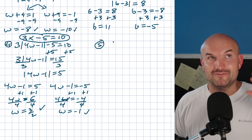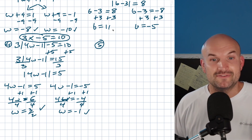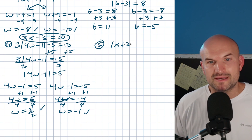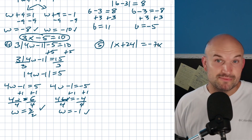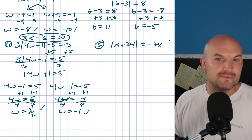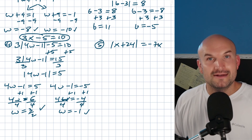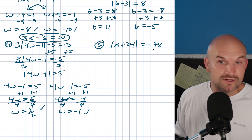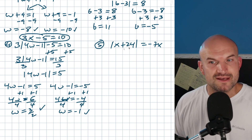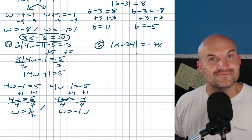However, the next example is where red flags come up — there's now a very high probability of having an extraneous solution, because we have a variable on both sides of the equation, not just inside the absolute value. It becomes extremely important to check our solutions. With the absolute value isolated, it may appear to equal a negative expression, but we don't know what x is — x could itself be negative, so we proceed.